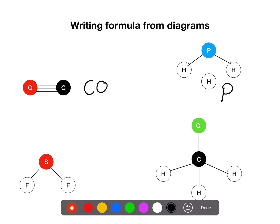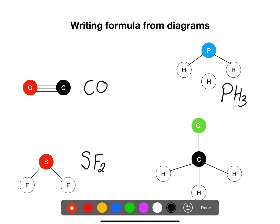In the second example we have one phosphorus and three hydrogens. Here we have one sulfur and two fluorine. And in this example we have three different elements: one carbon, one chlorine, and three hydrogens.